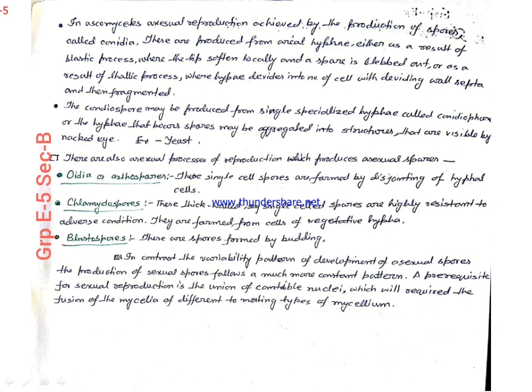The conidia spore may be produced from a single specialized hypha, or the hyphae that bear spores may be aggregated into structures that are visible to our naked eye. One such example is yeast. Other ways of asexual reproduction include formation of arthrospores, which are formed by disjointing of hyphal cells, chlamydospores which are formed from vegetative hypha, and blastospores which are spores formed from the body.